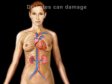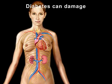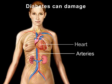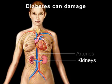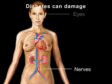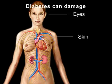Diabetes can eventually cause damage to the heart, arteries, kidneys, nerves, eyes, and skin.